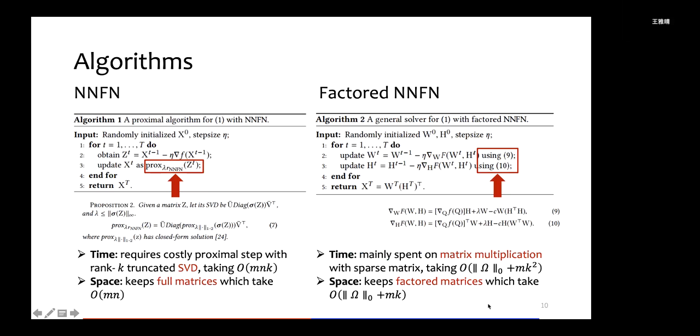So here we list the optimization algorithms for NNFN regularizers and also the factored NNFN regularizers. For NNFN, we use the proximal algorithms where the proximal operators still need to manipulate individual singular values. So even if we use rank k truncated SVD, the computation cost is still high, which takes O(MNK) time and O(MN) space. As for factored NNFN, the computation cost is mainly spent on matrix multiplications with sparse matrices, and this reduces both the time and space complexities significantly.